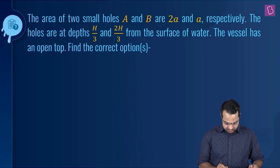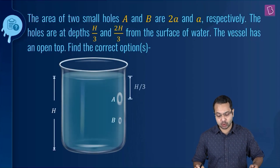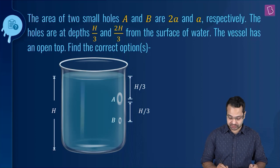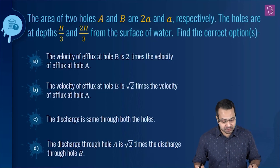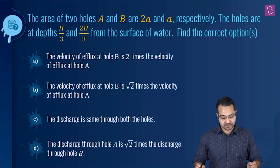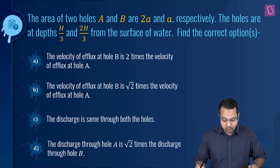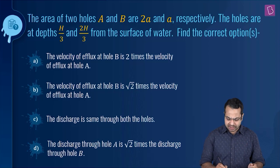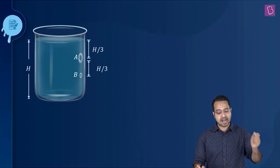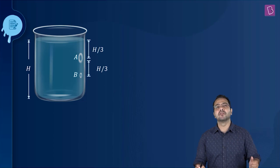The question is: the areas of two small holes A and B are 2a and a respectively. The holes are at depths h/3 and 2h/3 from the surface of water. The vessel has an open top. Find the correct options. This is a multiple-option correct question. We have to find the relationship between the velocity of efflux at each hole and the relationship between the discharge (volumetric flow rate) through each hole.